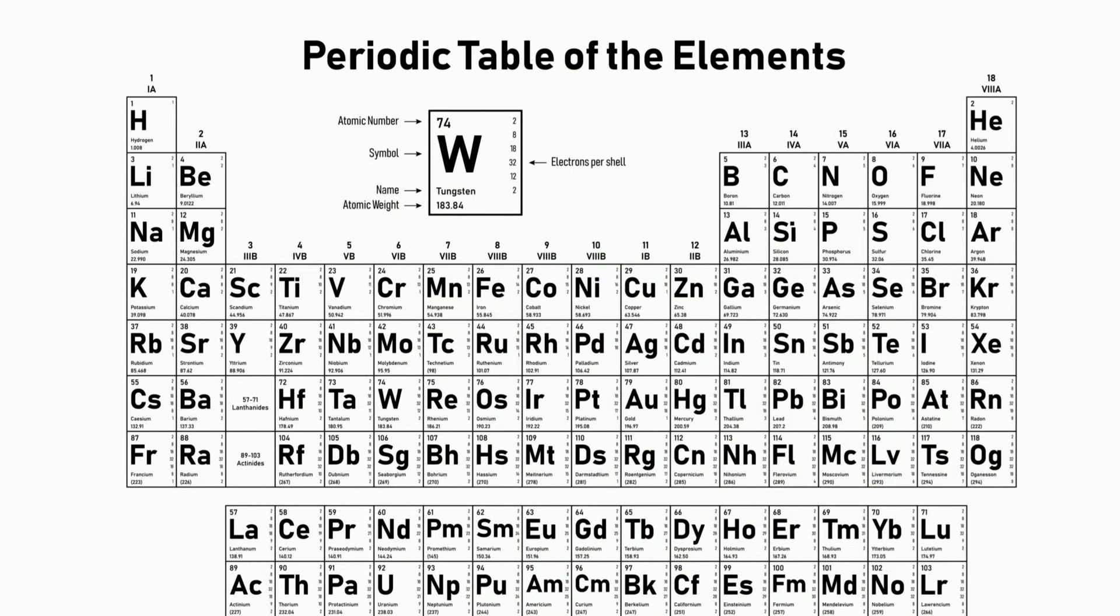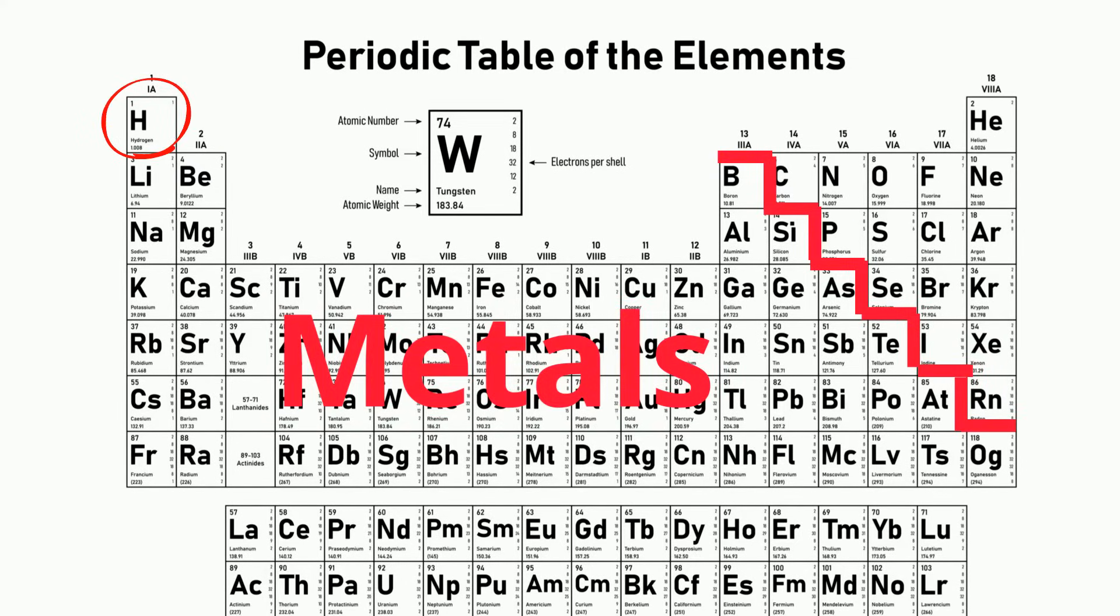If you look at the periodic table, you will see that the metals are located to the left of the zigzag staircase. The exception is hydrogen, I'll get to that in a moment.